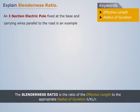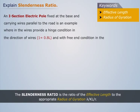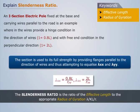An I-section electric pole fixed at the base and carrying wires parallel to the road is an example wherein the wires provide a hinge condition in the direction of the wires, giving effective length = 0.8L, and a free end condition in the perpendicular direction, giving effective length = 2L. The section is used to its full strength by providing flanges parallel to the direction of wires, thus attempting to equalize lambda XX and lambda YY.